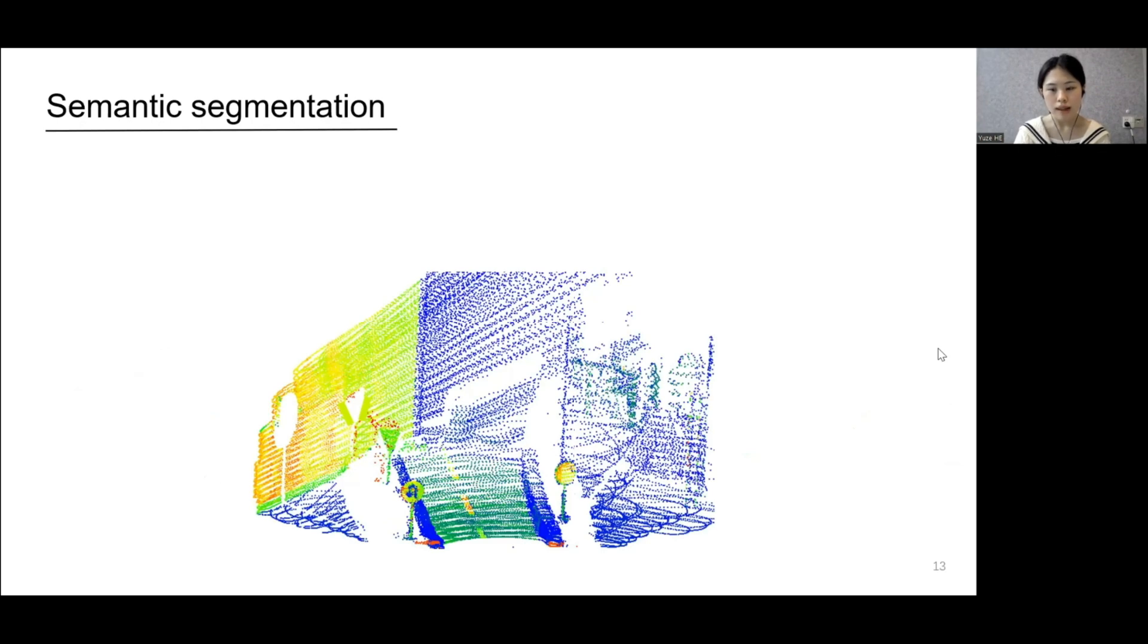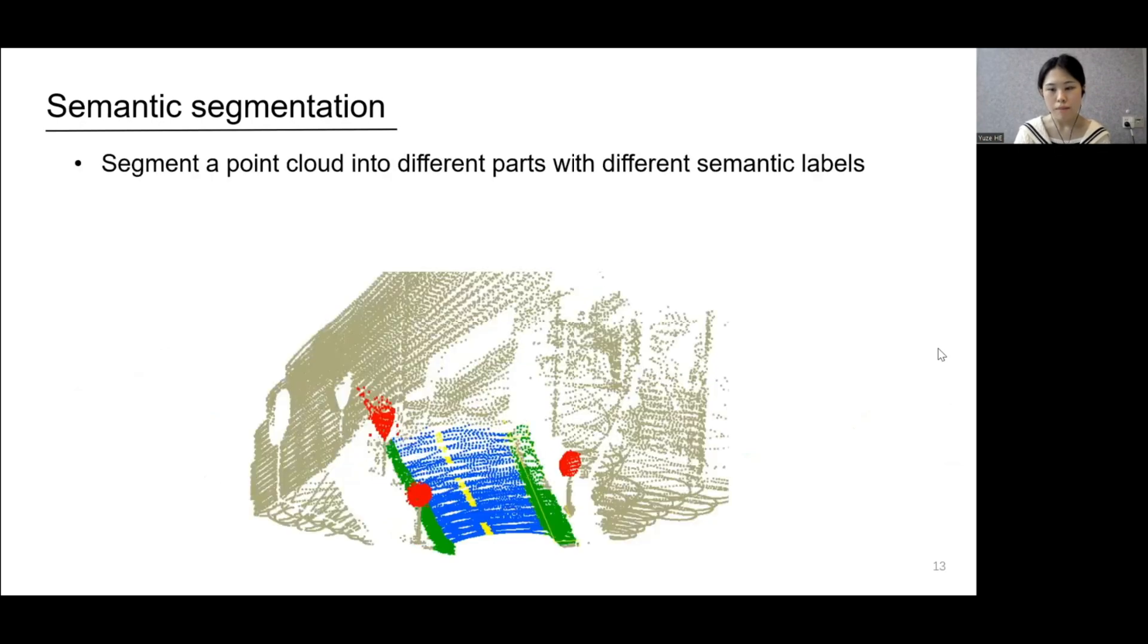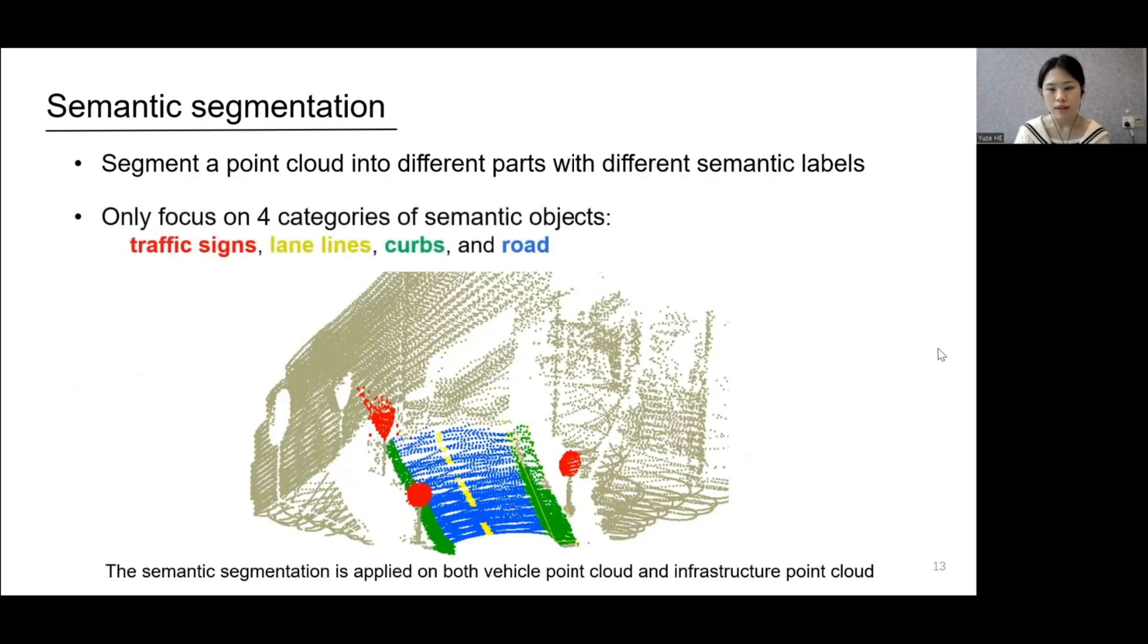We first segment points into instances with semantic labels and only extract four categories of semantic objects, including traffic signs, lane lines, curbs, and road. These objects are most static, distinctive, and common objects in traffic scenarios, thus are robust to dynamic scenes and can be easily recognized.